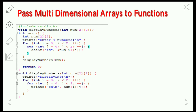The next type is passing multi-dimensional arrays to functions. Here we pass a two-dimensional array to a function. We simply pass the base address of the two-dimensional array. First, the function 'display numbers' is declared with a two-dimensional array of size 2x2. The program takes four numbers as input from the user and displays those numbers.